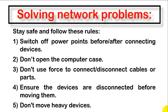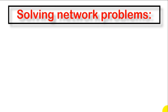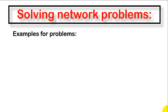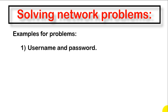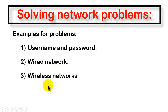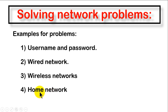Now let's talk about specific network problems. If you face problems while accessing the network, we have two example network types: school network and home network. Problems can occur with your username and password, with a wired network, or with a wireless network. We will also cover home network problems with the router.